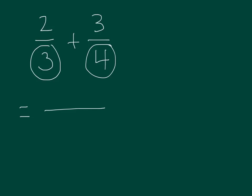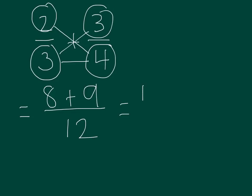First of all we're going to multiply the two denominators, 3 times 4 is 12, and then we're going to do it crossways. 4 times 2 is 8, plus 3 times 3 is 9. The answer is going to be 17 over 12. If we simplify that, 1 and 5 twelfths.